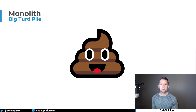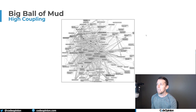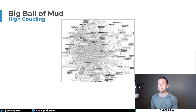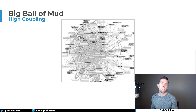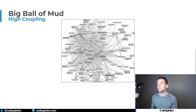This is what most people think of when they think of a monolith — a turd pile. Really, behind the scenes, why they think that is because if they've dealt with a monolith, they've actually dealt with a big ball of mud. But a big ball of mud isn't necessarily a monolith. You could think of any of these bubbles as a class or a module, showing all the different coupling between classes, services, and modules. This high degree of coupling is really what causes the issue — it makes a system difficult to change and easy to introduce bugs, because changing one class or module affects another.